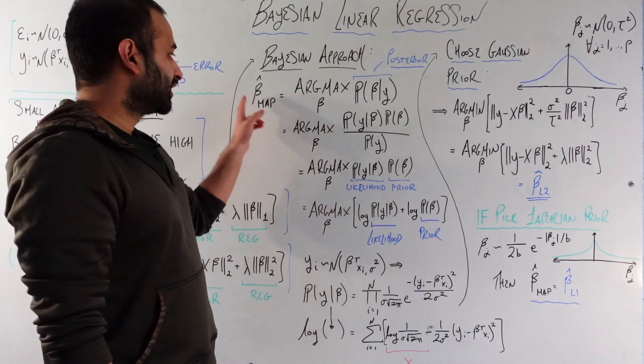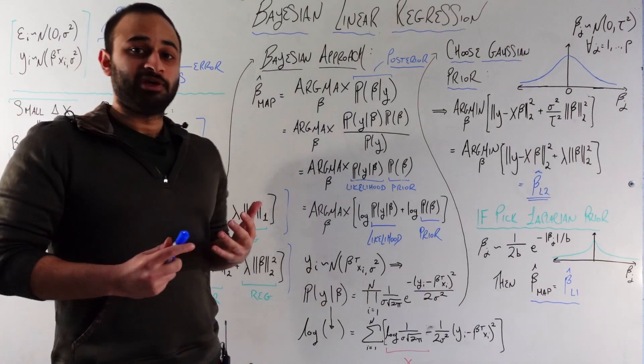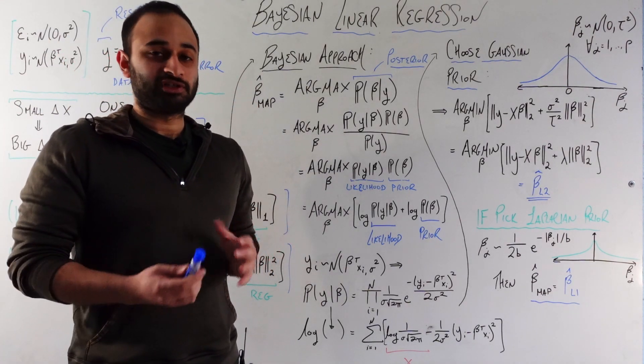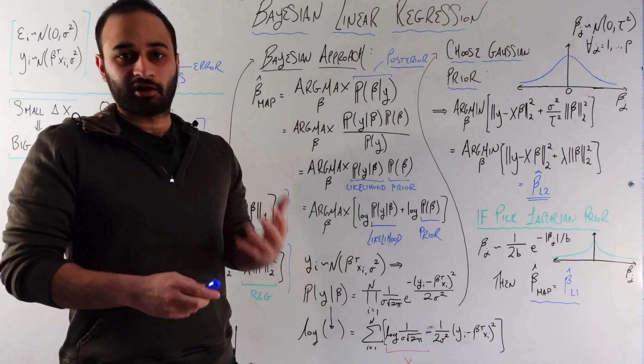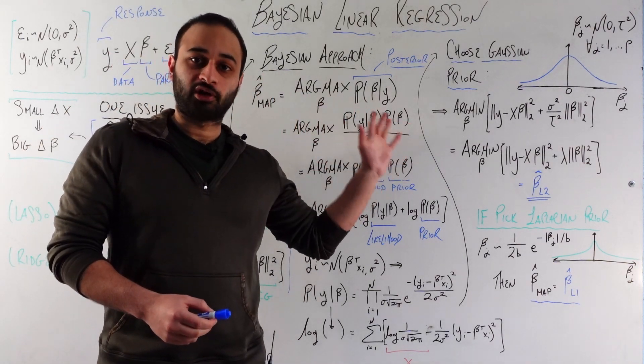The natural thing to do is maximize this posterior, because if we're able to find the betas which maximize this posterior, we have exactly answered the very natural question which is, this setting of betas is the most likely given the data that we actually observe. That makes a lot of sense. We give that setting of betas the special name, beta hat MAP. MAP stands for maximum a posteriori, which is this Latin phrase, but in a nutshell it means that that's the betas which maximize the posterior probability.